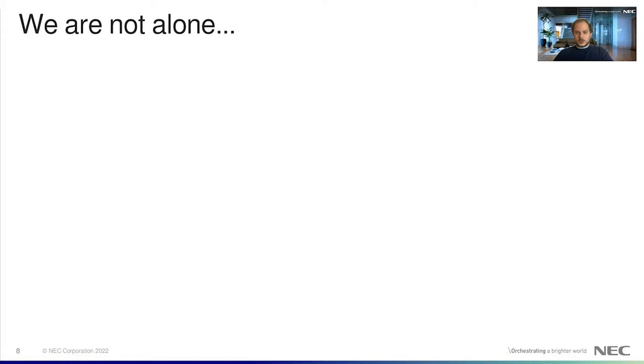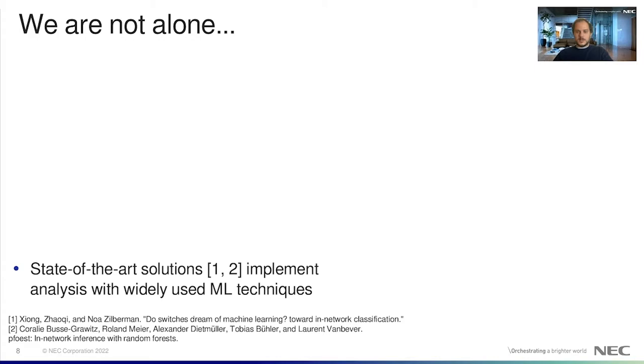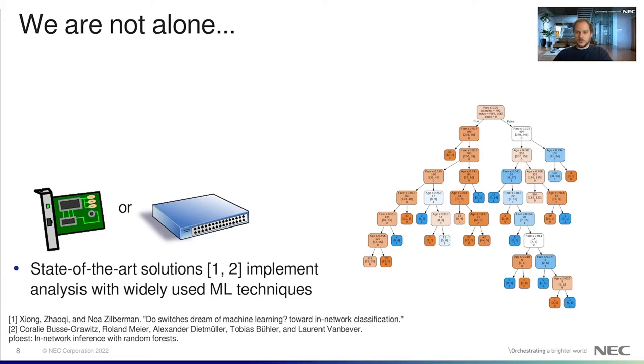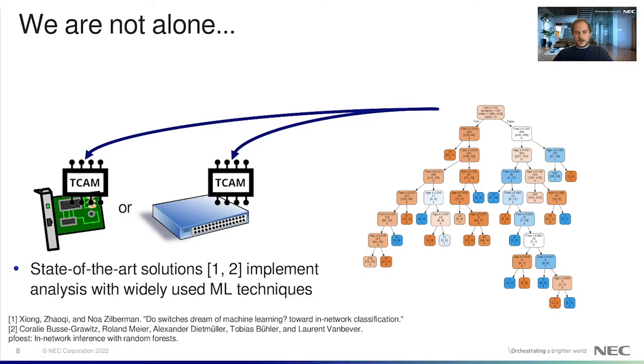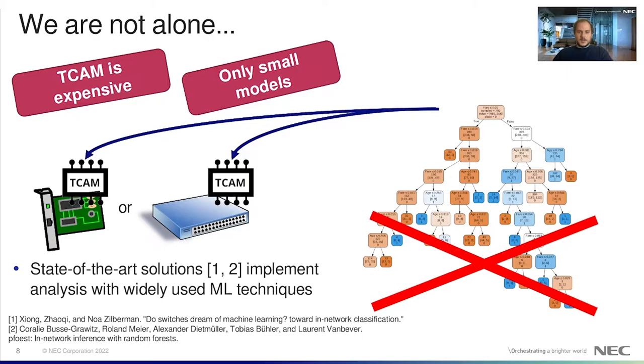It seems that it makes sense to execute the analysis directly in the data plane. Indeed, we are not the first to use this approach. There are already state-of-the-art solutions that allow executing widely used machine learning techniques, such as decision trees and random forests, in SmartNIC switches. However, these solutions strictly rely on match-action tables that support ternary matching. The point here is that TCAM memories are not always available in a NIC data plane, are costly, since TCAM memory is about six times more expensive in terms of silicon area than SRAM, and are limited because only decision trees with small depth will fit in memory, with a direct impact on the inference accuracy.